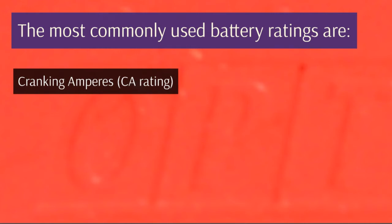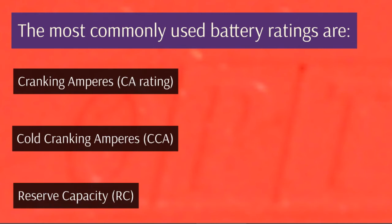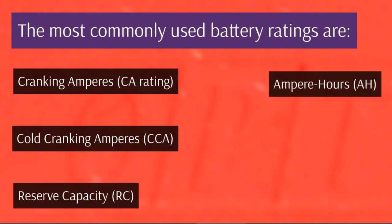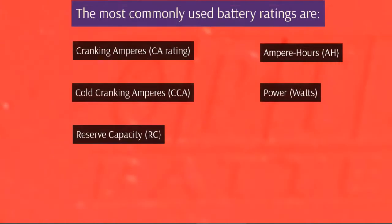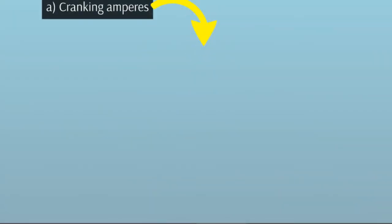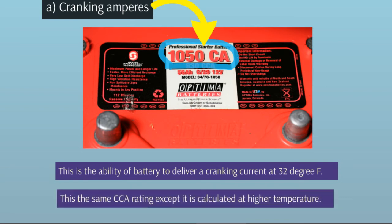The most commonly used battery ratings are: Cranking Amperes (CA), Cold Cranking Amperes (CCA), Reserve Capacity (RC), Ampere Hours (AH), and Power (Watts). Cranking Amperes (CA) is the ability of a battery to deliver a cranking current at 32 degrees Fahrenheit.